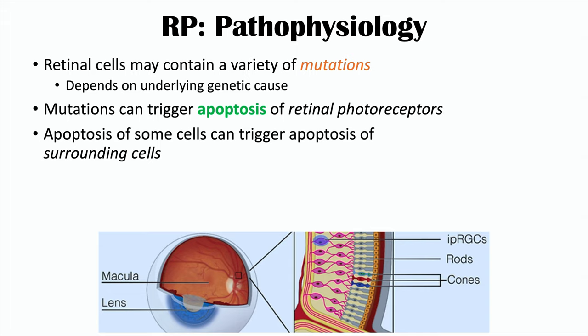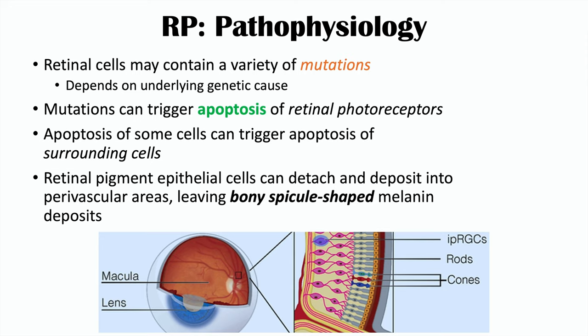That apoptosis can then trigger apoptosis in surrounding cells. So if there is programmed cell death of a rod cell, it can lead to programmed cell death of surrounding cones or other rods. With that apoptosis, retinal pigment epithelial cells then detach and deposit into perivascular areas, leading to what we call bony spicule-shaped melanin deposits. This finding will be important for the diagnosis later.